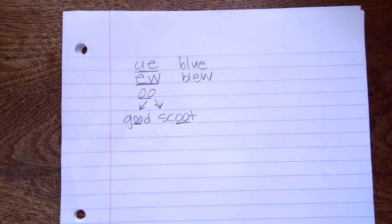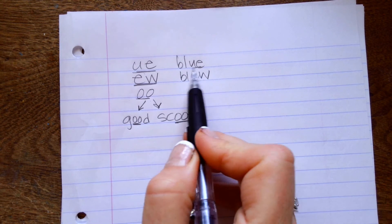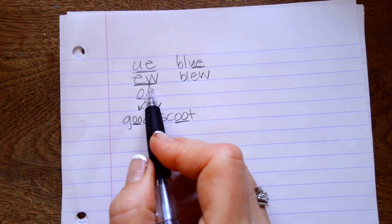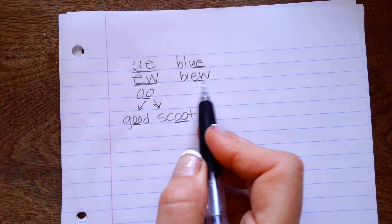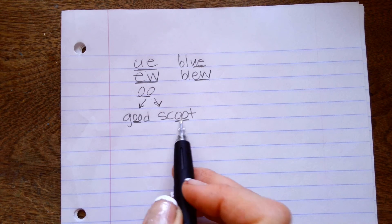Exactly. And sometimes we get it wrong, but it's okay. We're fine with that. So this one makes OO like blue, the color blue. This one makes OO like blue, like I blew a bubble. And then this makes OO and OO.